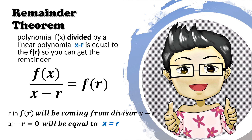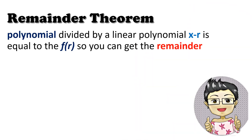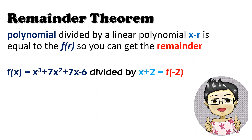Kung titignan nyo rito, x minus r will be equated to 0. Kung itatranspose nyo yung negative r, you will be able to get the value of x. And yung value ng r na yun will be substituted to all the x's in the given polynomial. So, using this remainder theorem, we will be able to get the remainder.